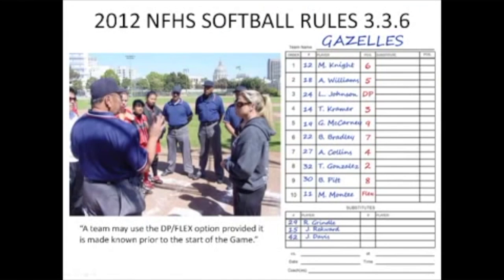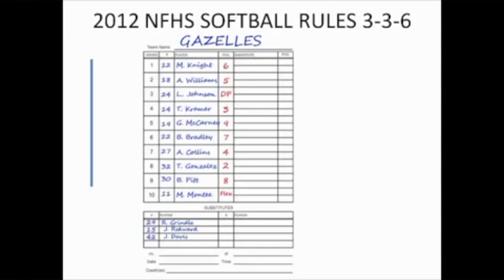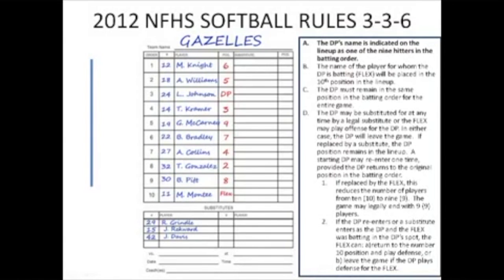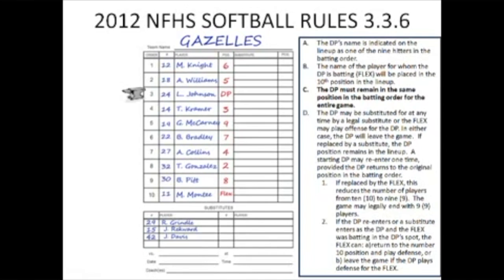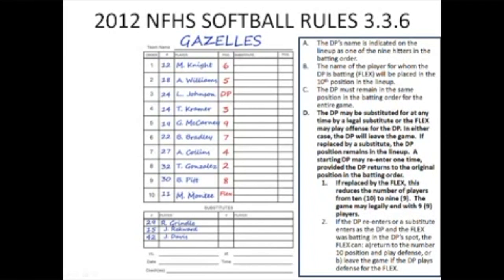The 2012 National Federation of High Schools Softball Rule 3.3, Article 6 states that a team may use the DP-FLEX option, provided it is made known prior to the start of the game. Part A states the DP's name is indicated on the lineup as one of the nine hitters in the batting order. Part B states the name of the player for whom the DP is batting — also known as the flex — will be placed in the 10th position in the lineup. Part C states the DP must remain in the same position in the batting order for the entire game. Part D states the DP may be substituted for at any time by a legal substitute, or the flex may play offense for the DP.